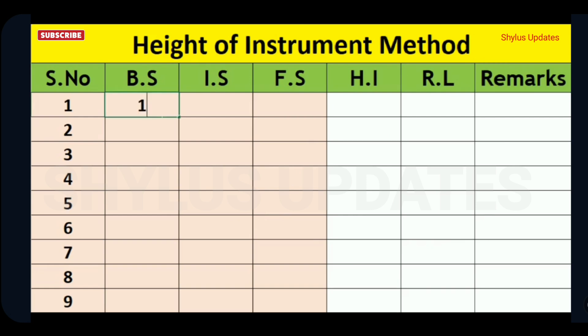The first reading 1.123 should be entered in back site BS. Next, up to change in position, the readings should be entered in intermediate site IS. In question, it is mentioned that the instrument was shifted after 5th reading. Therefore, enter 5th reading in fore site FS. This point is the change in position of instrument CP, which I have mentioned in remarks column.